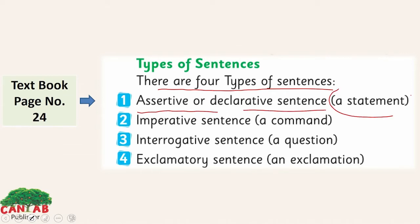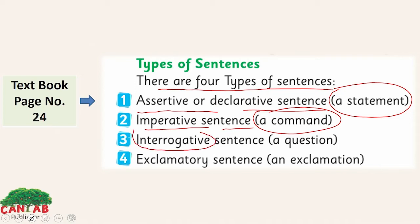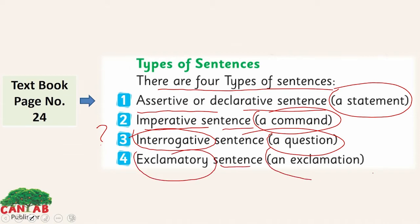The second type is the imperative sentence — a command, when we give an order or a command to someone. Third is the interrogative sentence, when we ask a question from someone, and it always ends with a question mark. Fourth is the exclamatory sentence — an exclamation in which we express strong feelings. Let's discuss them one by one.